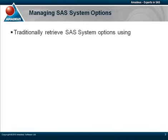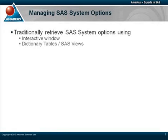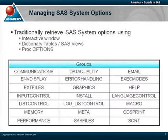So how can we go about retrieving the values of our SaaS system options? There are a variety of different techniques we can use. The first involves using the interactive window. The next technique is to use a series of SQL dictionary tables called options and goptions, which have corresponding SaaS views available within the SaaS help library. ProcOptions represents the most common way of retrieving our SaaS system options, and it has a variety of uses — we can retrieve specific categories of options using the groups shown in the table below, or alternatively use the option equals syntax to retrieve the value of a specific option.